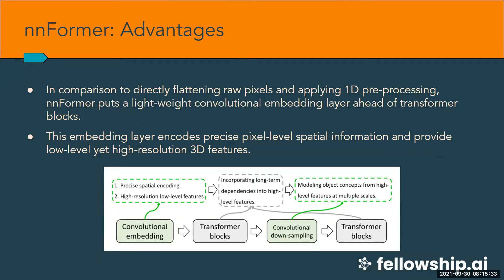From the model's perspective, it first puts a lightweight convolutional embedding layer ahead of the transformer blocks instead of directly flattening raw pixels and applying 1D pre-processing. The convolution embedding layer encodes precise pixel-level spatial information and provides a low-level yet high-resolution 3D feature set. After the embedding block, transformer and convolutional downsampling blocks are interleaved to fully entangle long-term dependencies with high-level and hierarchical object concepts, which helps improve the generalization and robustness of learned representations.